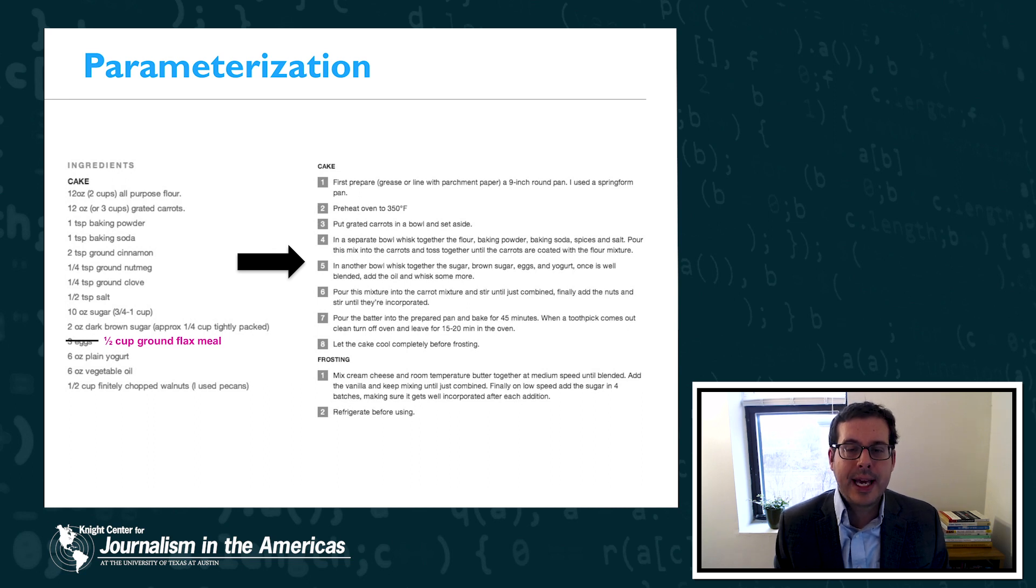So again, the power here is that parameters allow algorithms to achieve many different outcomes to suit a much wider range of contexts. One parameter gives us the regular cake, a different parameter for the same algorithm gives us a vegetarian cake.